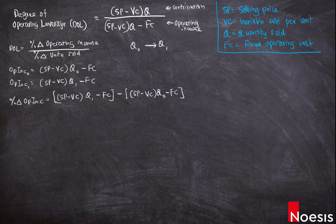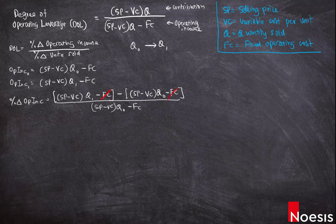The whole thing is divided by the initial operating income, which is (SP − VC) × Q₀ minus the fixed cost. If you simplify this, you'll see that the fixed costs cancel out and we just take the difference in the units.